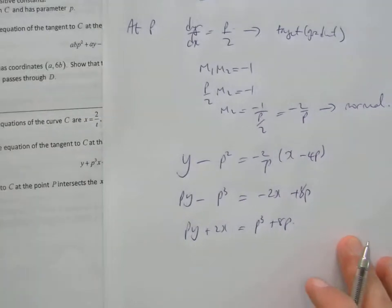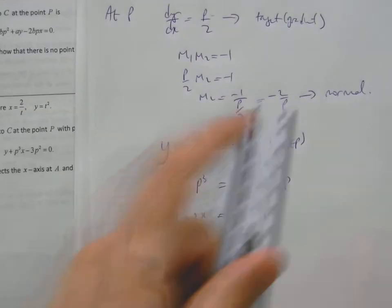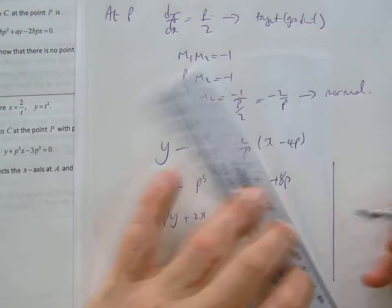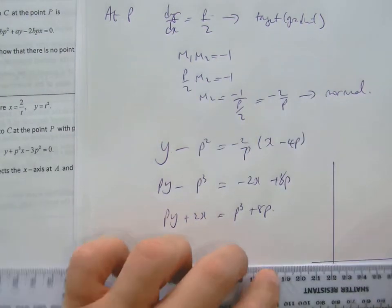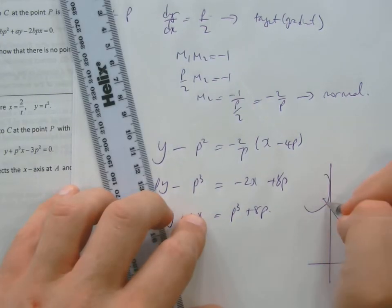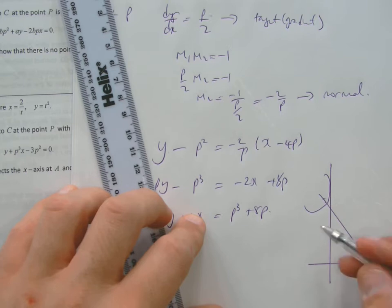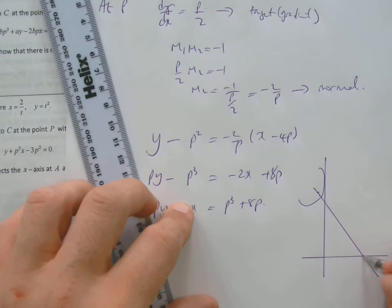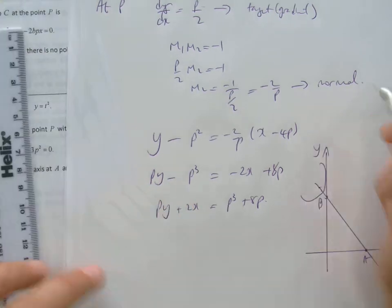It says in the question that this normal intersects the x-axis at A, y-axis at B. So it's a bit like that, maybe this is your curve here. That's the normal to it, it's your tangent there, and it intersects the x-axis at A, y-axis at B.